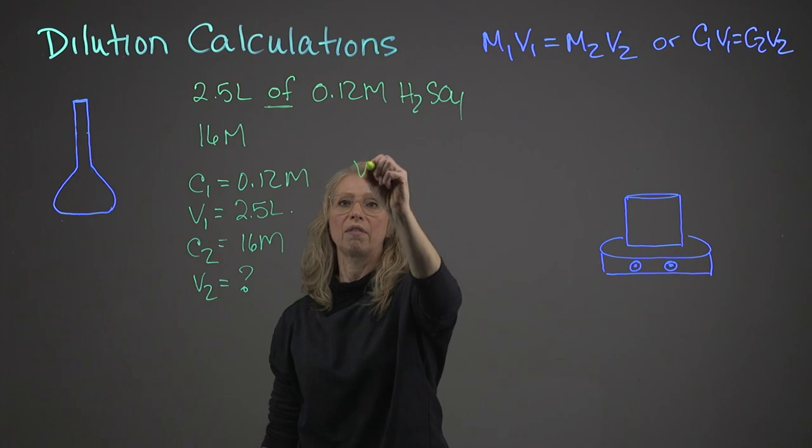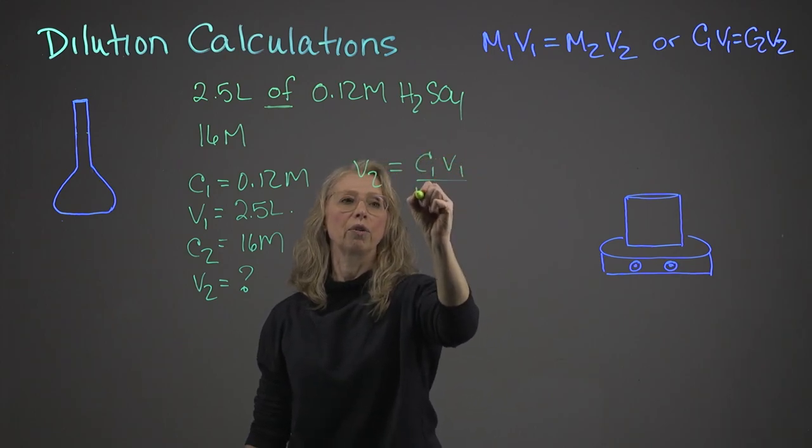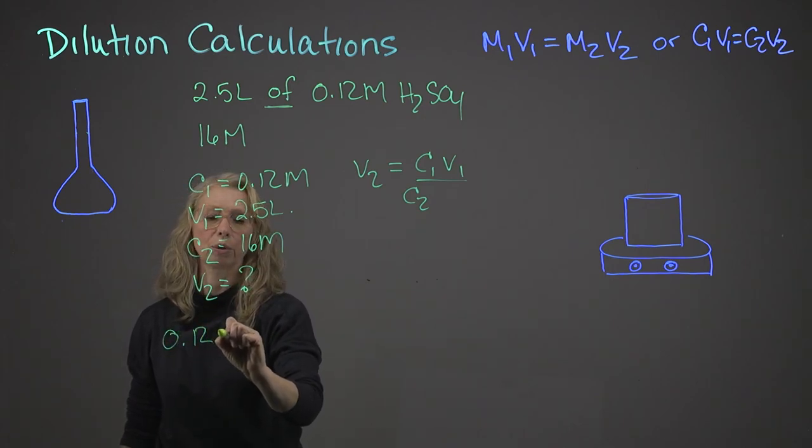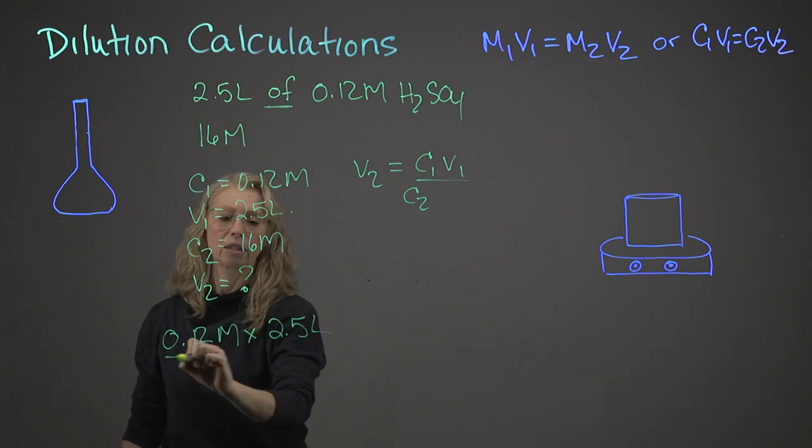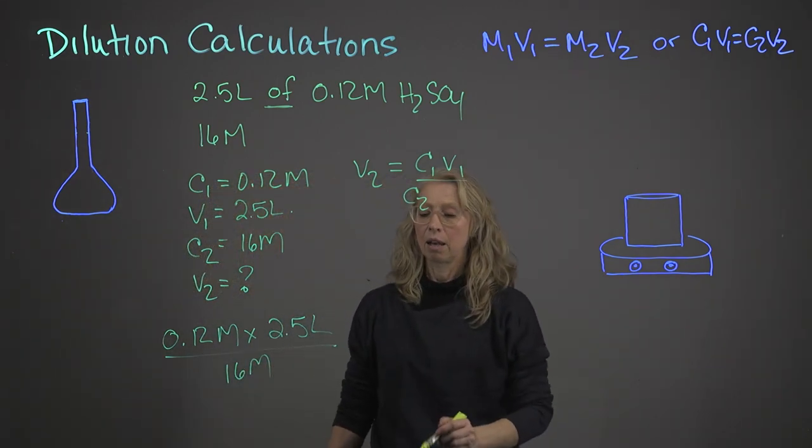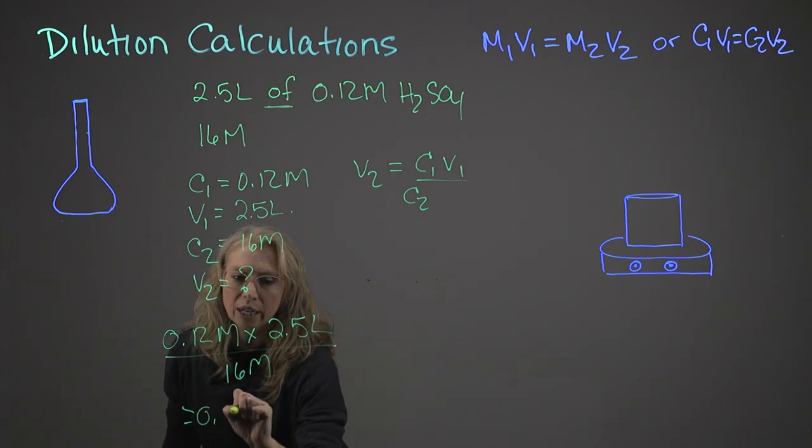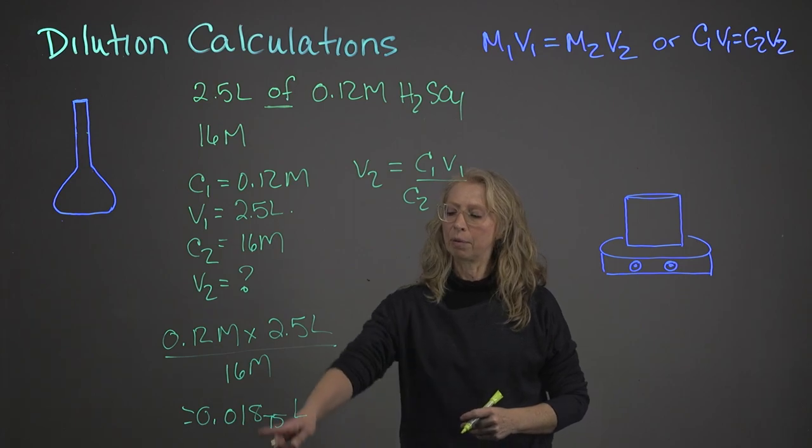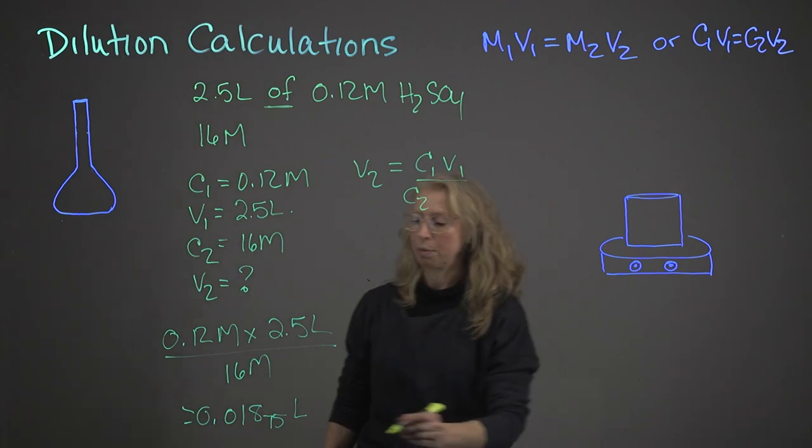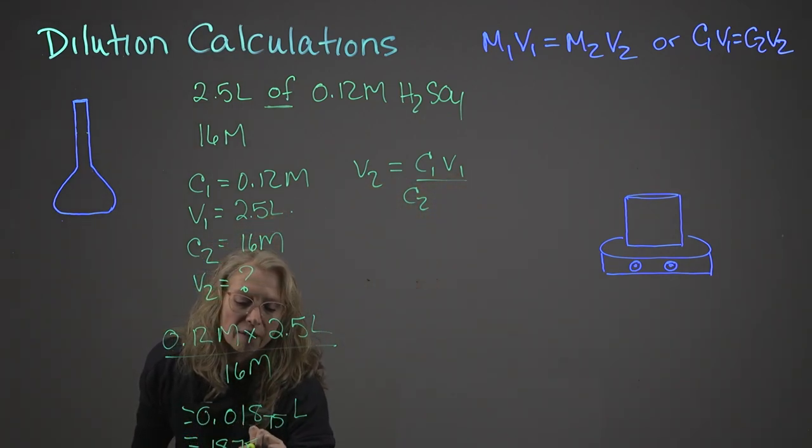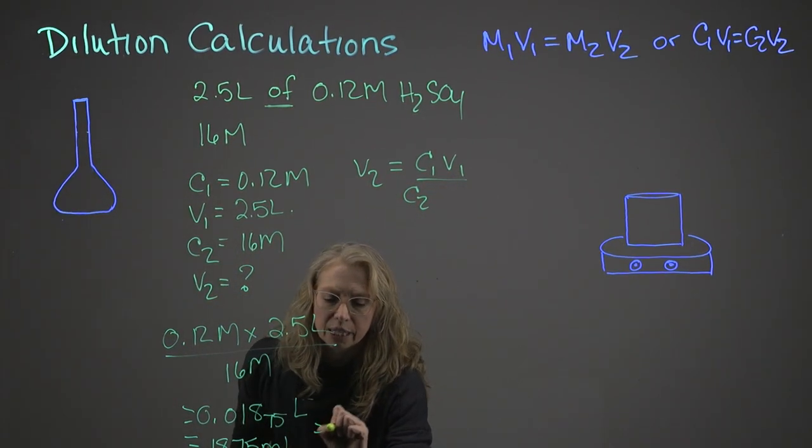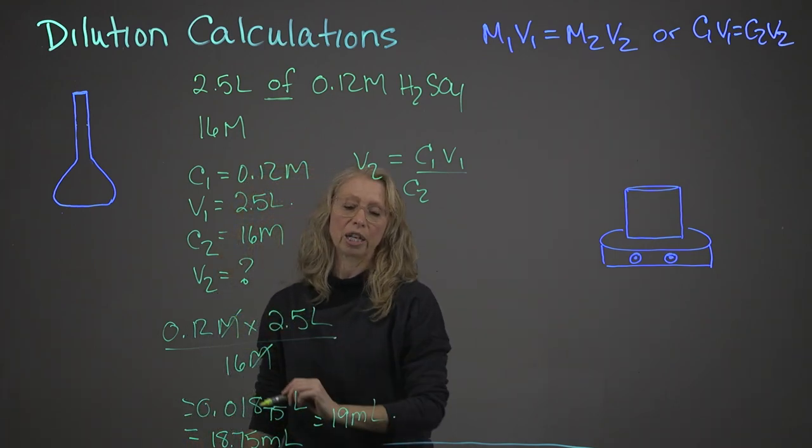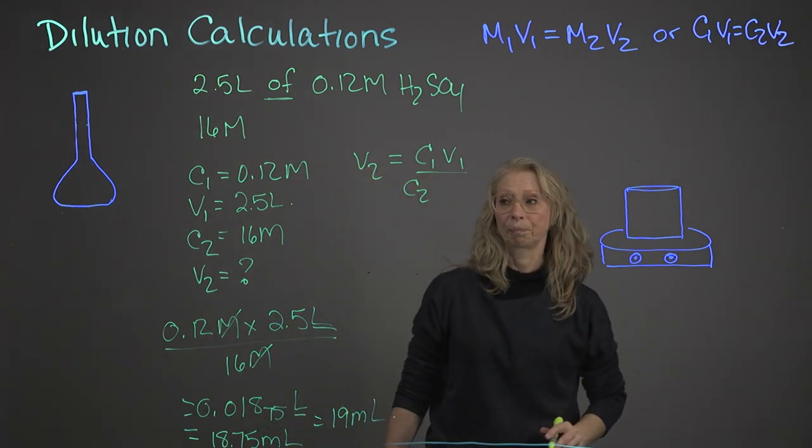So if I rearrange this to solve for V2, my V2 is going to equal C1V1 over C2. So now let's plug in these values. I've got 0.12 molar times 2.5 liters divided by 16. My final answer is going to be 0.01875 liters. This is, if I'm in the lab, this value should really be converted to milliliters. So converting it to milliliters is 18.75 milliliters. If we factor in the significant figures, that would be 19 milliliters. And also pointing out that my units in my calculation, the concentrations cancelled and my units are now in volume.